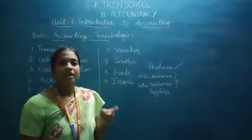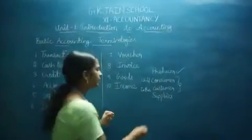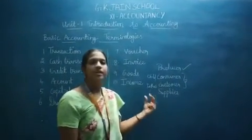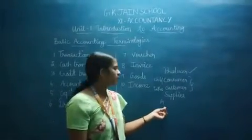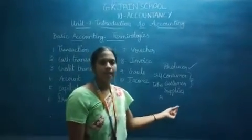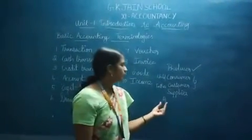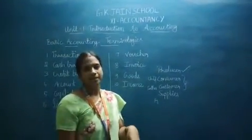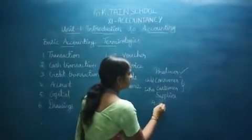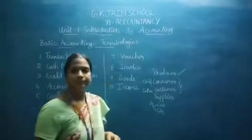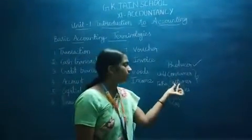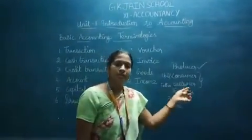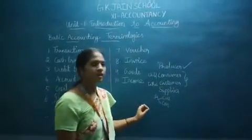There is another situation where the consumer and customer can be the same person. For example, person A goes to an ice cream shop, buys the ice cream, and then eats it himself. In this case, A is both the customer — because he bought it — and also the consumer — because he consumed it. So one who buys is the customer; one who uses is the consumer.